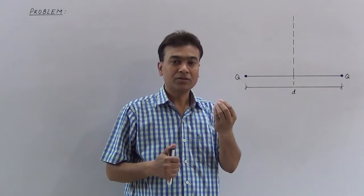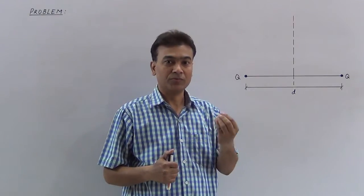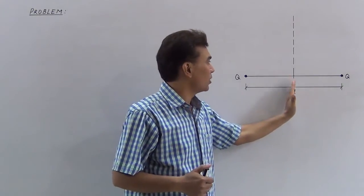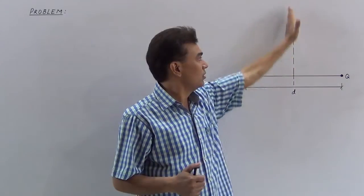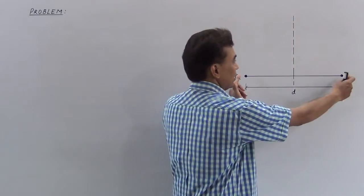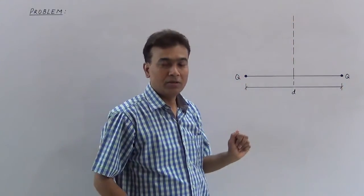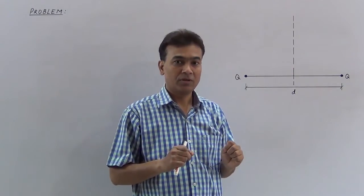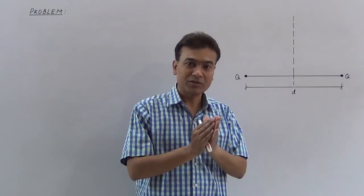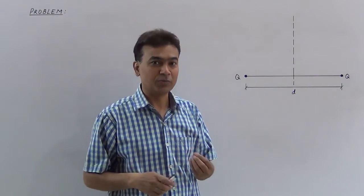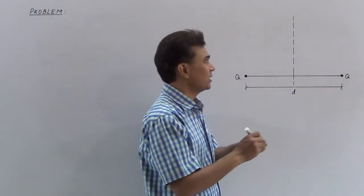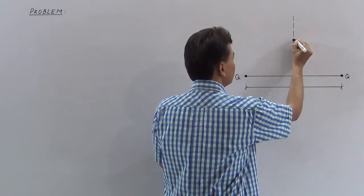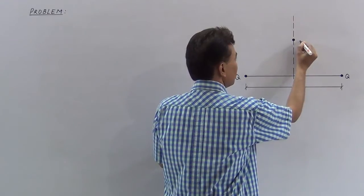Where should the charge q be placed on the perpendicular bisector of the line joining two charges, such that it experiences maximum force? We need to calculate the position of the small charge q. Suppose we choose the unknown — we have a small charge to place at this location.